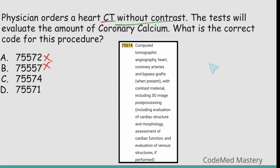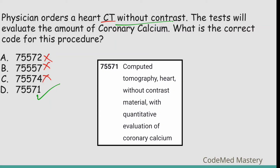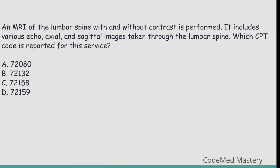Option C: 75574 — computed tomographic angiography, heart, coronary arteries and bypass graft, with contrast material. The scenario does not mention angiography and it is without contrast, so eliminate option C. We are left with option D, which is the right answer: 75571 — computed tomography, heart, without contrast material, with quantitative evaluation of coronary calcium. This matches the question: CT of the heart without contrast to evaluate the amount of coronary calcium.